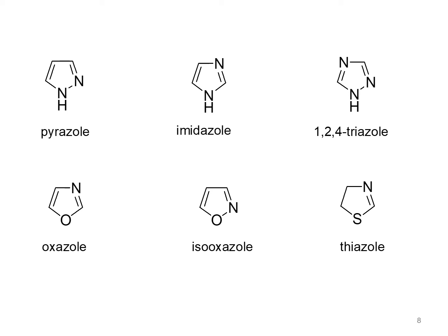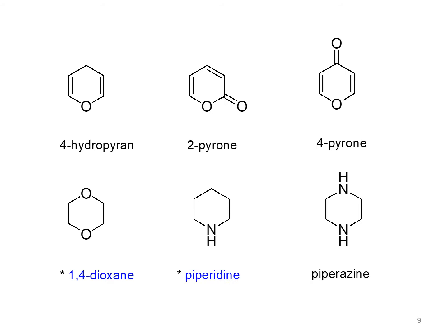We can also see other five-membered heterocyclic compounds containing two hetero atoms. Most of these compounds are known by their traditional name. Some examples are imidazole, isoxazole, thiazole, and pyrazole.